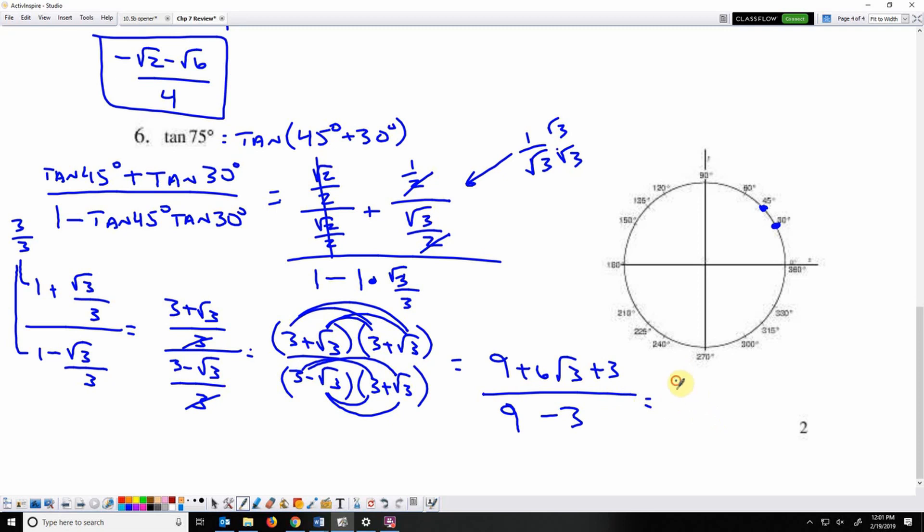So I have 12 plus 6 root 3 over 6. And 6 goes into all 3 terms. 2 plus root 3 is my final answer.